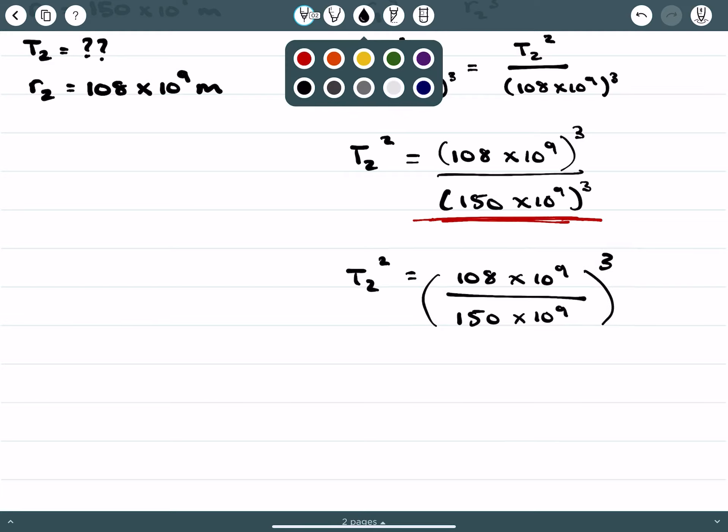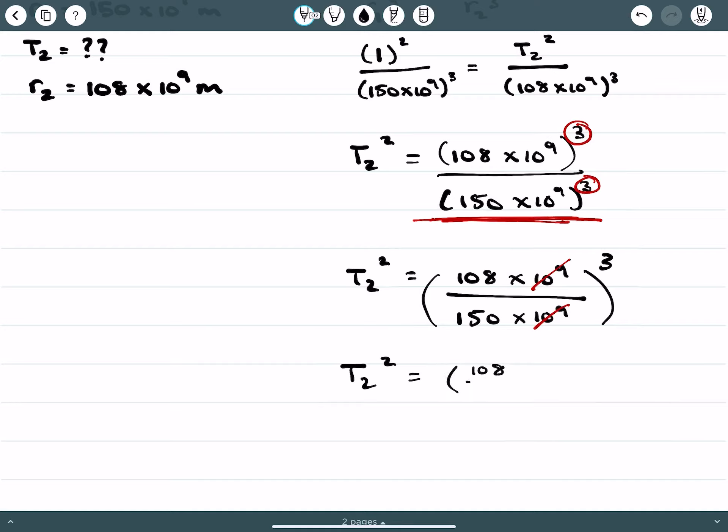The equation simplifies down nicely where I'm just looking at 108 over 150 all cubed, then square root both sides.